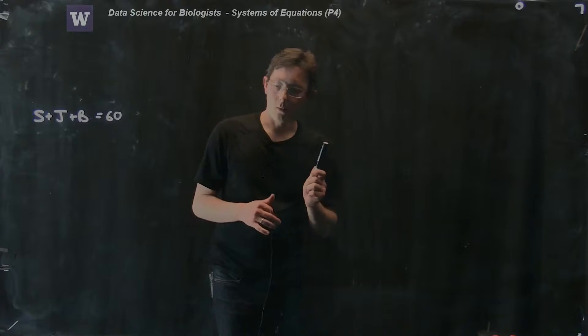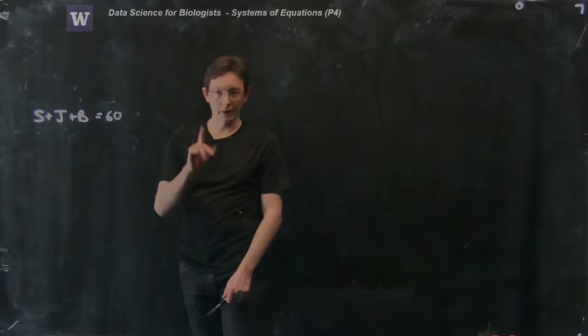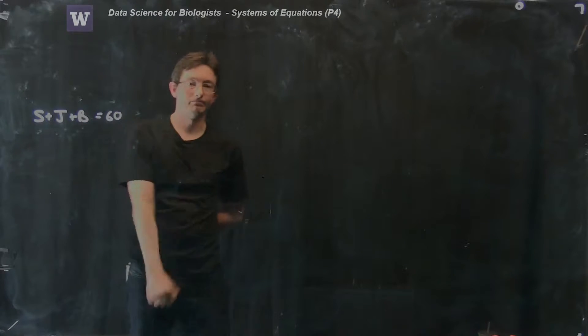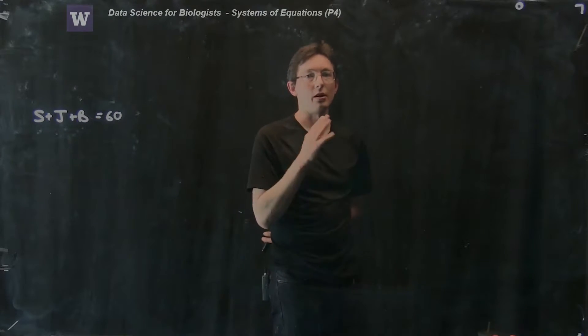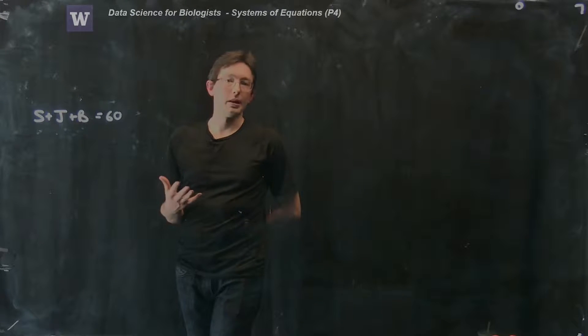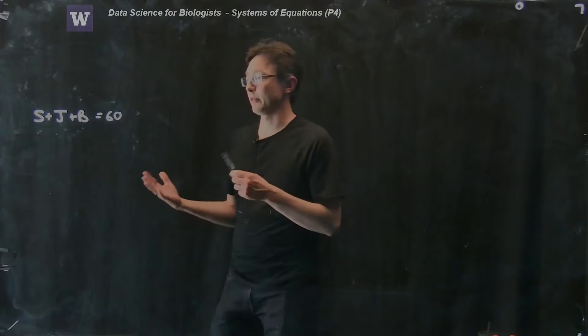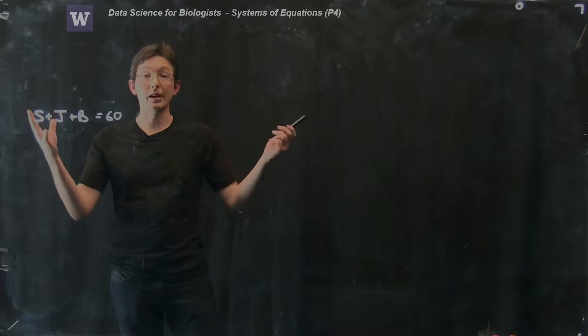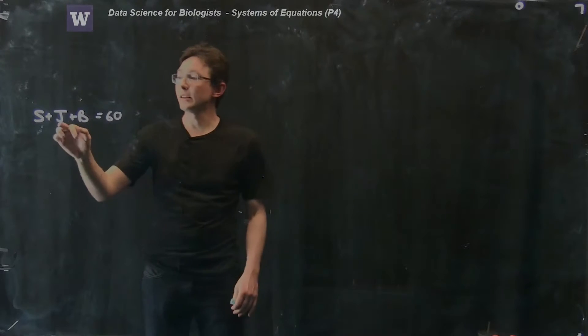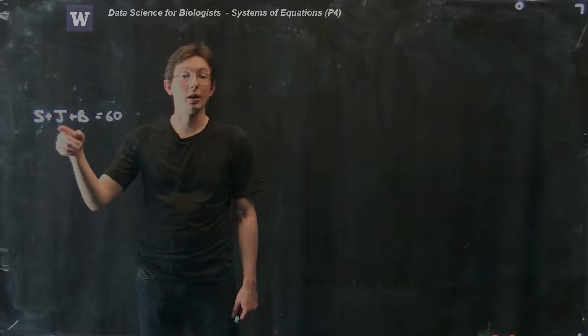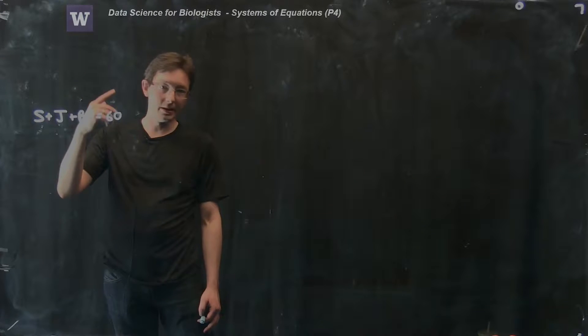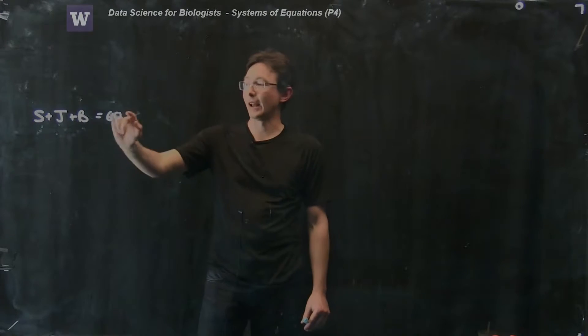But what if I just gave you one of these equations? What if I gave you the equation Sally's age plus John's age plus Bob's age equals 60? Could you tell me what Sally, John, and Bob's age are? Right, the answer is no, because there are infinitely many possibilities. If I lock in Sally's age at 20, there's still a ton of options for what John and Bob could be. John could be 10 and Bob could be 30 or Bob could be 10 and John could be 30 or any combination that adds up to this.